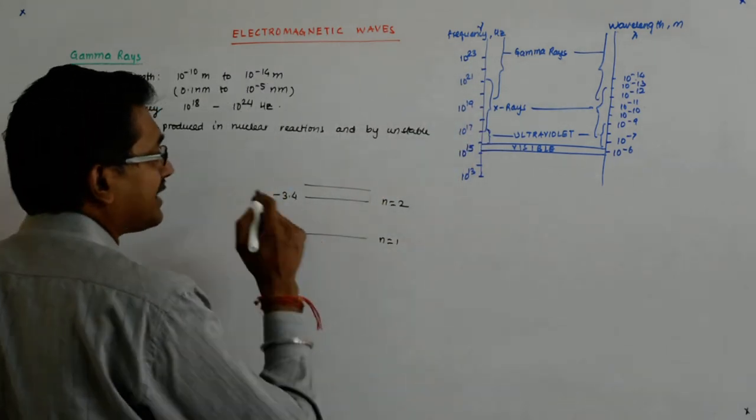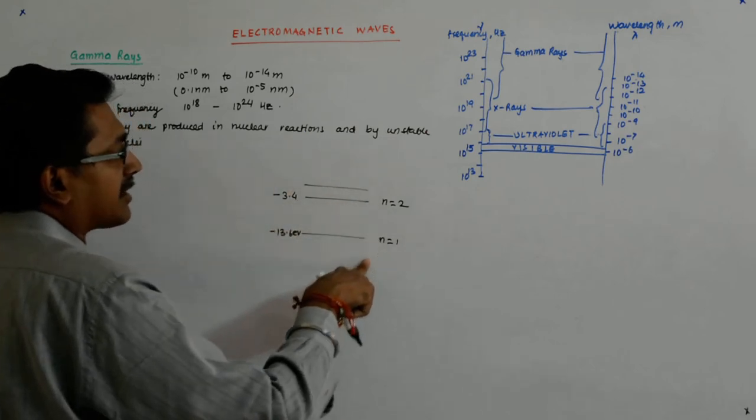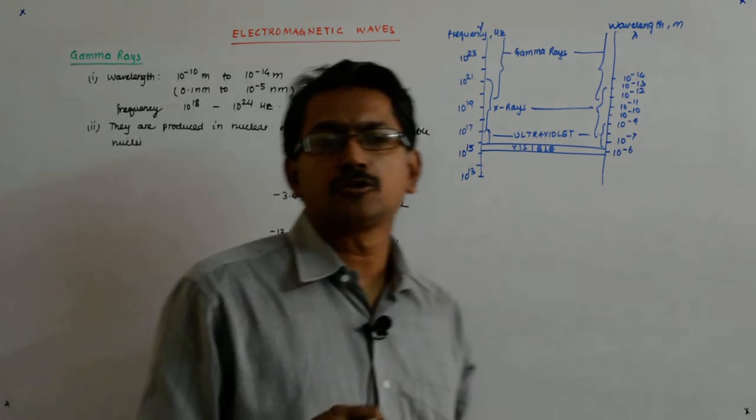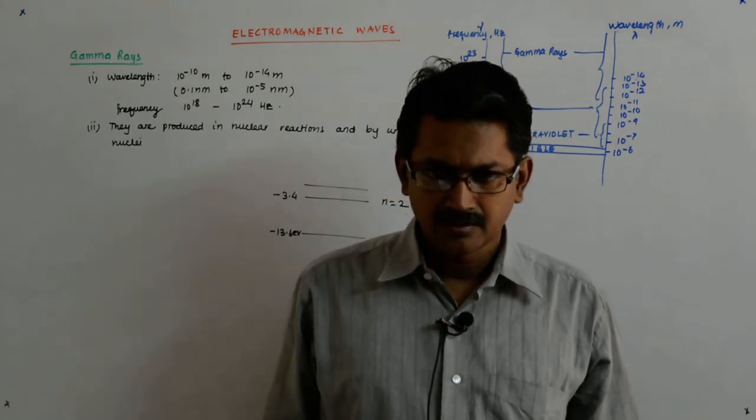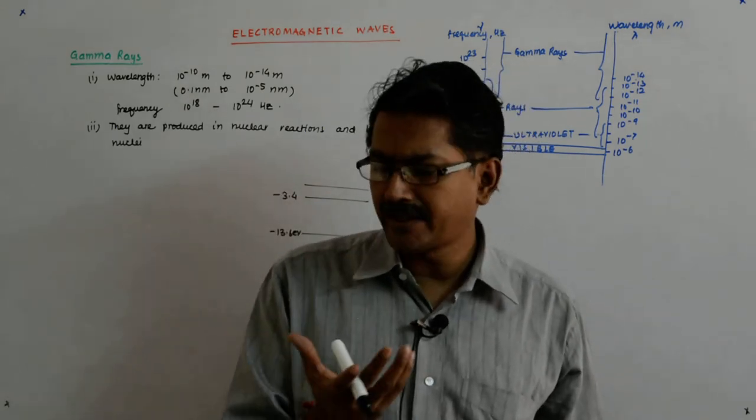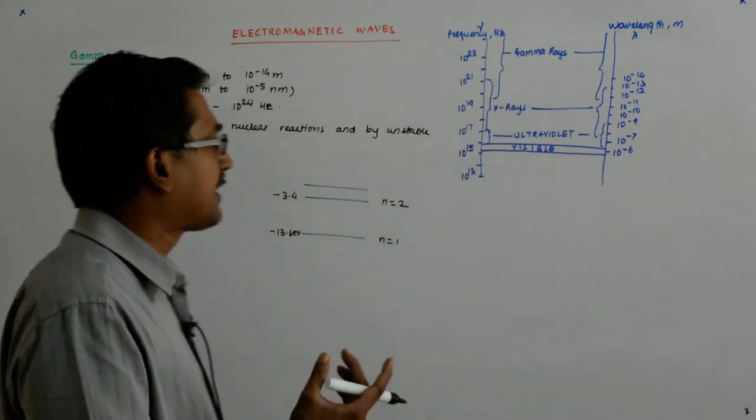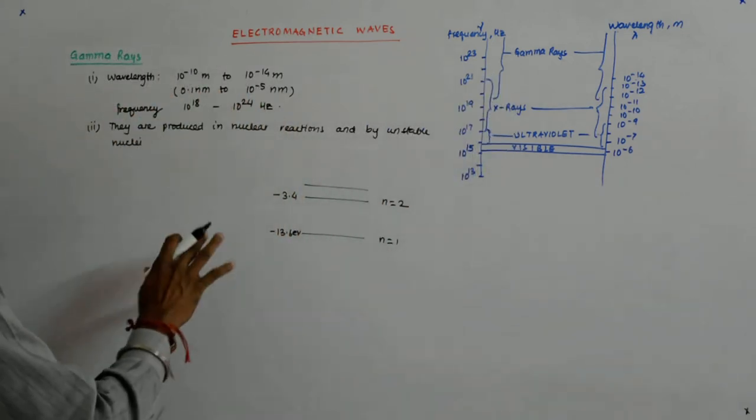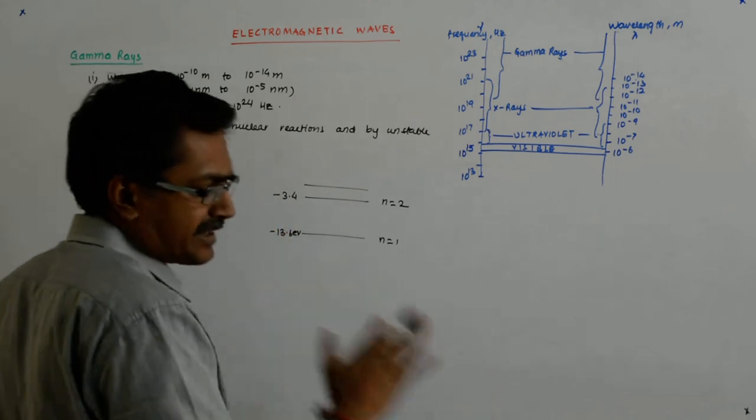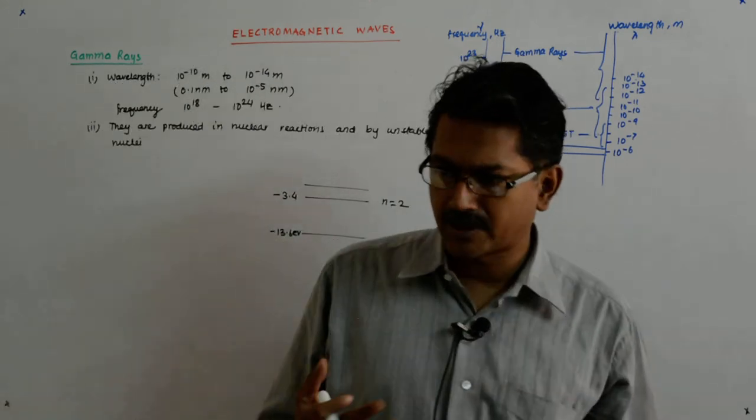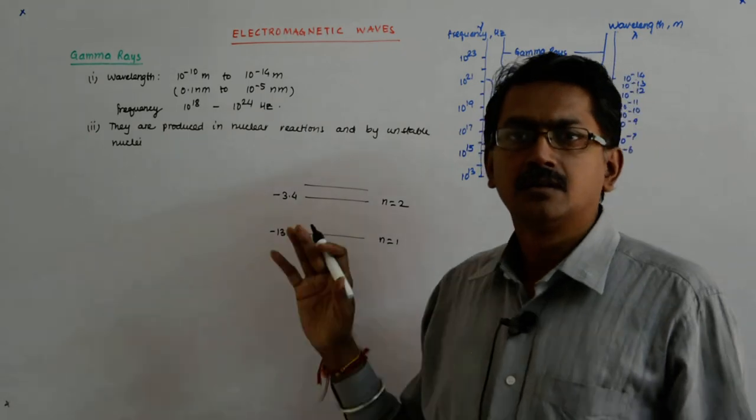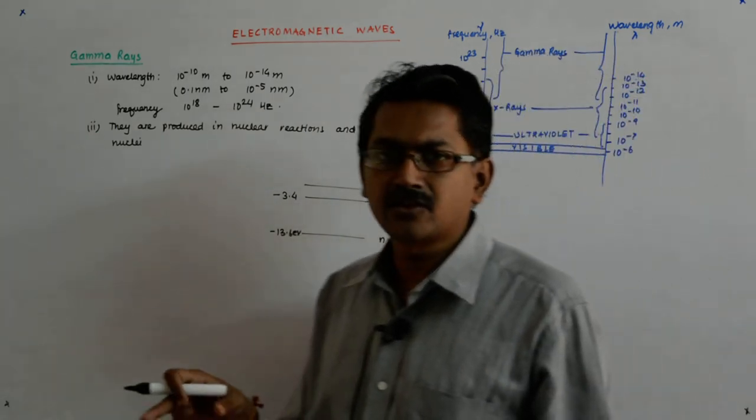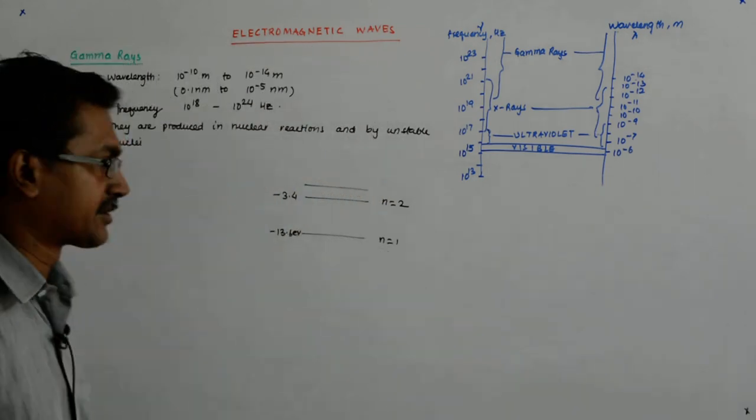Now in the same manner an unstable nuclei also undergoes transitions. The nuclei undergoes the transition and as a result of that you have radiations emitted as it becomes more stable. So from a higher level, if it goes down to the lower level, the radiations are emitted and gamma rays is one of the emissions that is radiated.